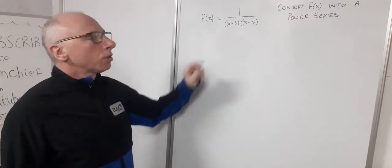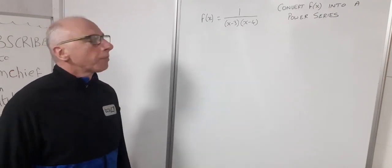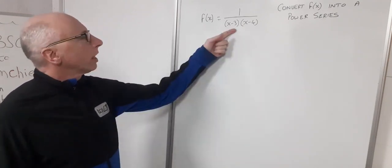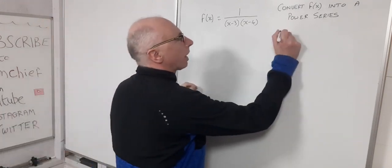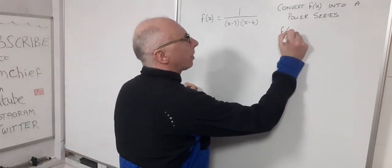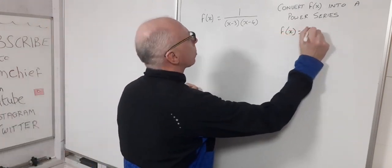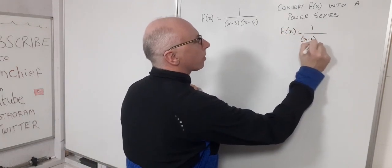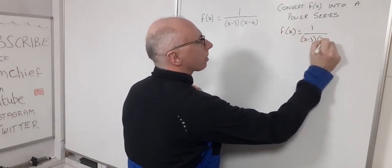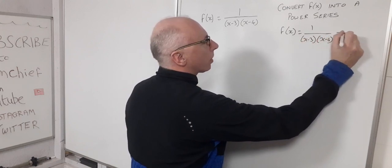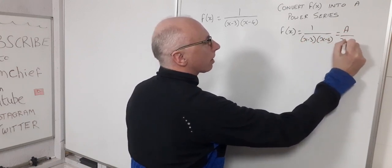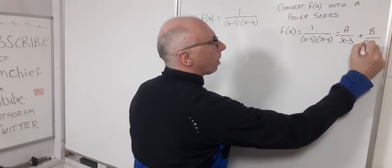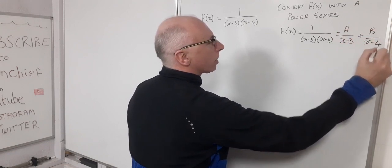So partial fraction decomposition — let's break this up. We'll have f(x) = 1 / [(x-3)(x-4)] and that's going to equal A / (x-3) plus B / (x-4).